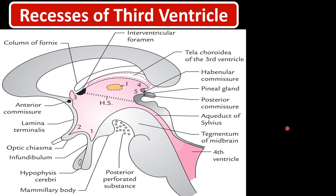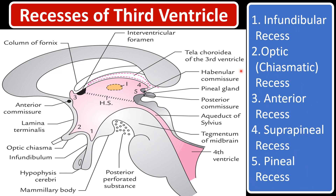Moving to the recesses of the third ventricle — there are five recesses. Going clockwise: first is the infundibular recess at the stalk of the pituitary gland, second is the optic chiasmatic recess, third is the anterior recess behind the anterior commissure, fourth is the suprapineal recess just above the pineal gland, and fifth is the pineal recess within the pineal gland.